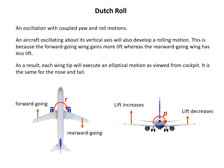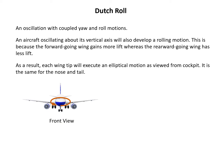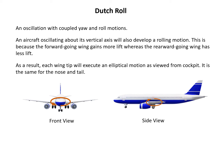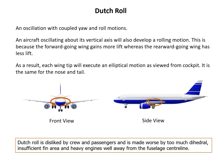As a result, each wing tip will execute an elliptical motion as viewed from the cockpit, and the same for the nose and the tail. In the Dutch Roll oscillation, the nose will move through an elliptical track, and the wing tip will also move through an elliptical track. Dutch Roll is disliked by crew and passengers, and it's made worse by too much dihedral, insufficient fin area, and heavy engines placed far away from the fuselage centerline.